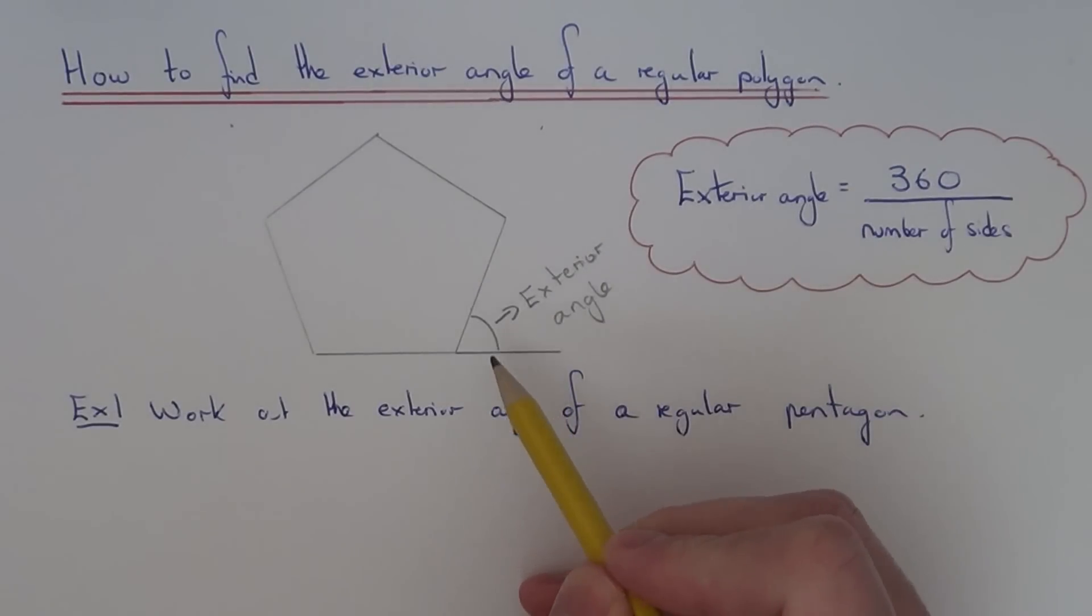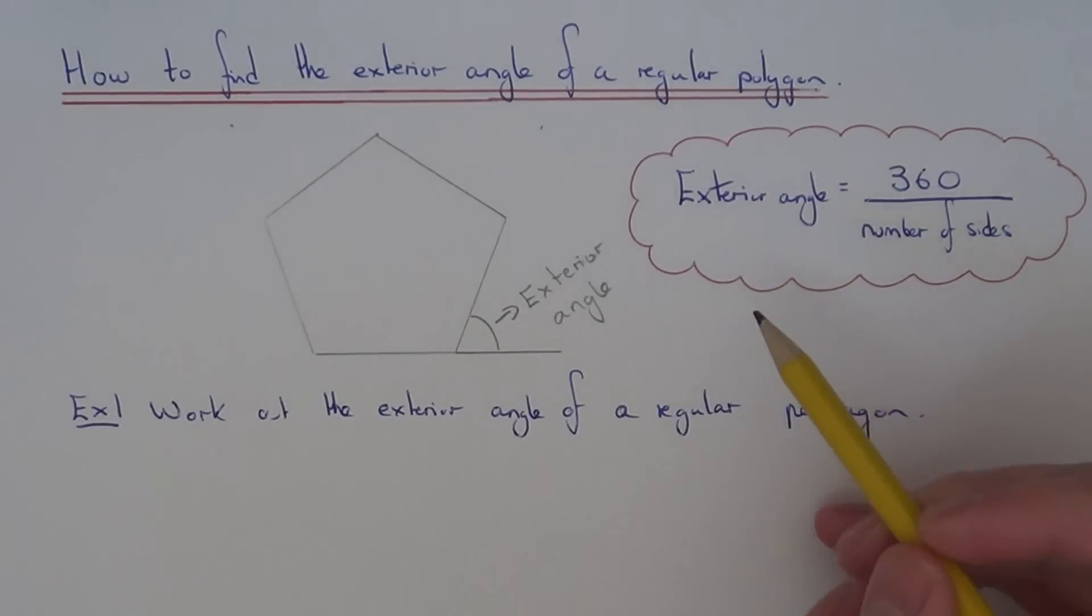Right, so we're going to calculate the exterior angle. This is the angle between the side of the polygon and the straight line as shown in the diagram here. And to find the exterior angle, you just need to divide the number of sides into 360.